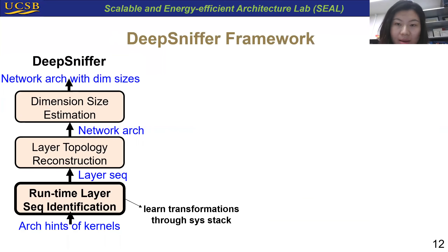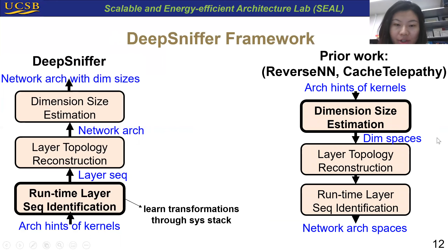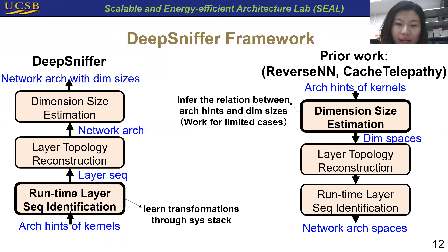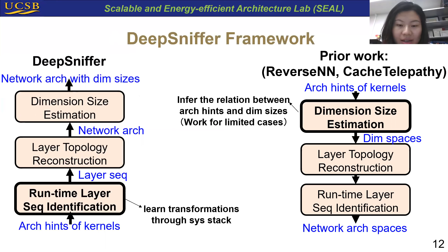In contrast, previous work tried to estimate the dimension sizes of every layer, and then based on the dimension sizes, predict the layer types and layer topologies — taking dimension size prediction as the more important step. In fact, as introduced previously, it's even hard to identify the layer boundary, not to mention understanding the relation between dimension sizes and architecture hints. Such methodology only works for very limited cases with assumptions based on specific designs.